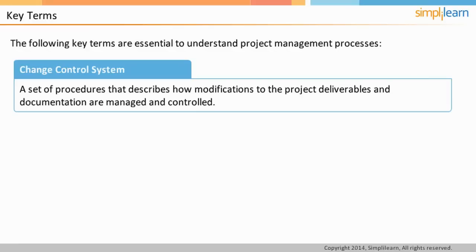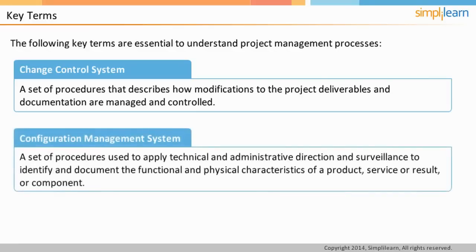A configurable item is any product, service, or result within the project whose characteristics need to be identified, documented, and placed under change control mechanism. Examples of configurable items are project documents, source code, physical parts such as tools, and recommended settings for machinery. When a formal configuration management system is put in place, it essentially establishes a control system that can preserve the characteristics of these items.